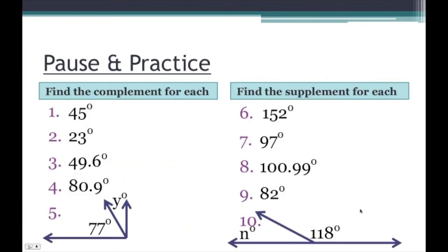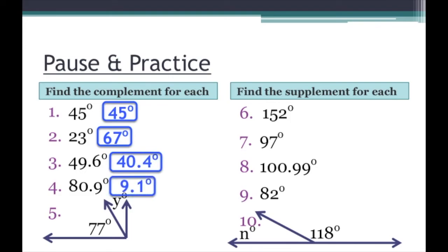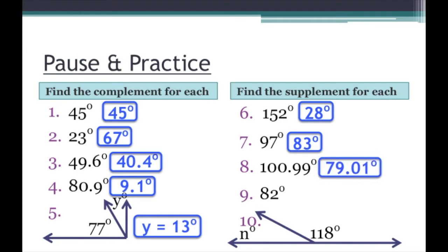So here's your pause and practice. Pause and practice, and when you're done, unpause the video. After a 3, 2, 1 countdown, your answer will be displayed. The answers are: number 1 is 45 degrees, number 2 is 67 degrees, number 3 is 40.4 degrees, number 4 is 9.1 degrees, number 5 is Y equals 13 degrees, number 6 is 28 degrees, number 7 is 83 degrees, number 8 is 79.01 degrees, number 9 is 98 degrees, and number 10 is 62 degrees.